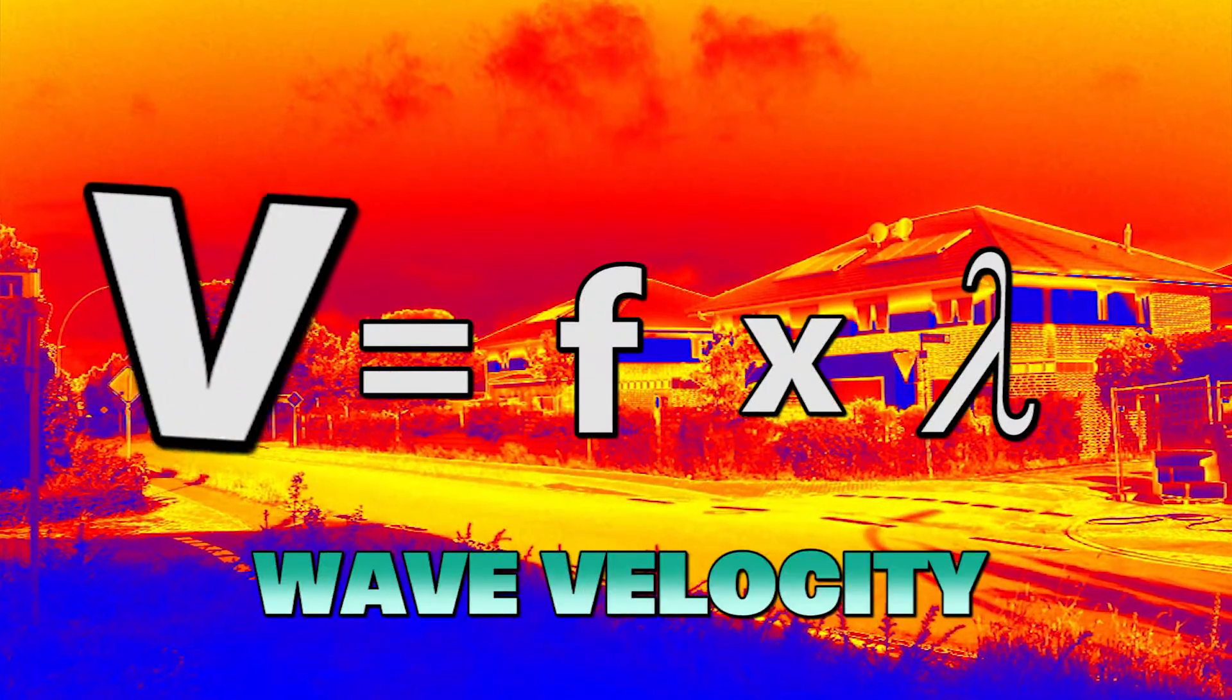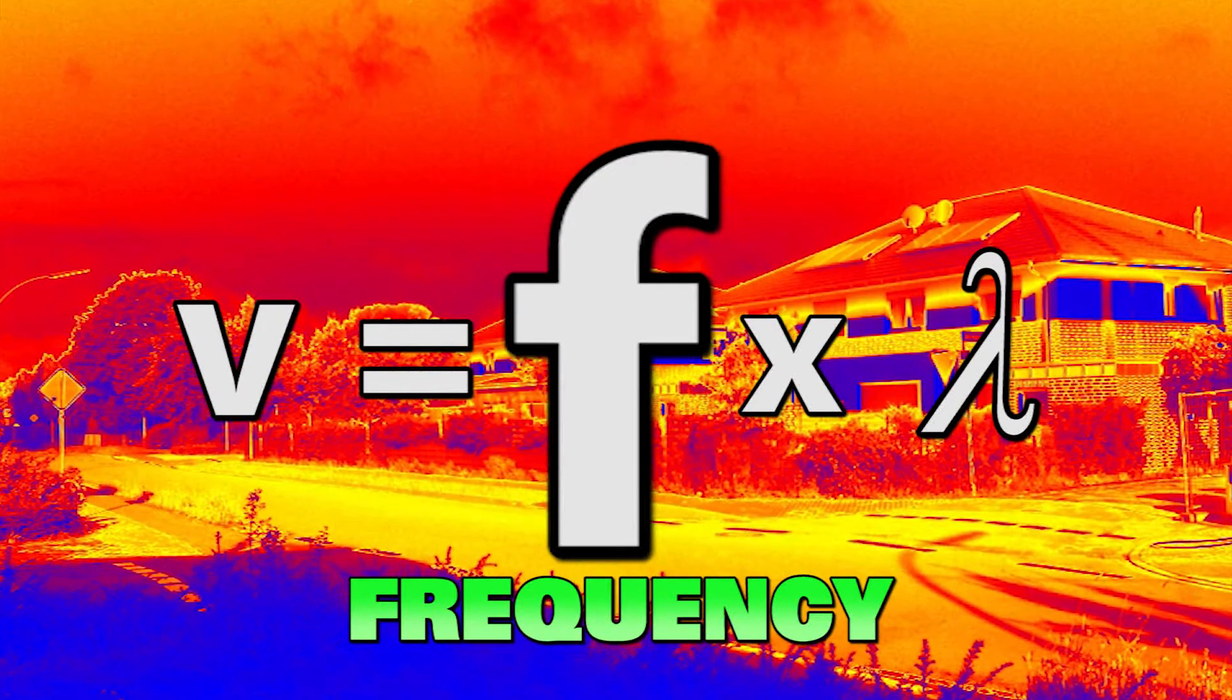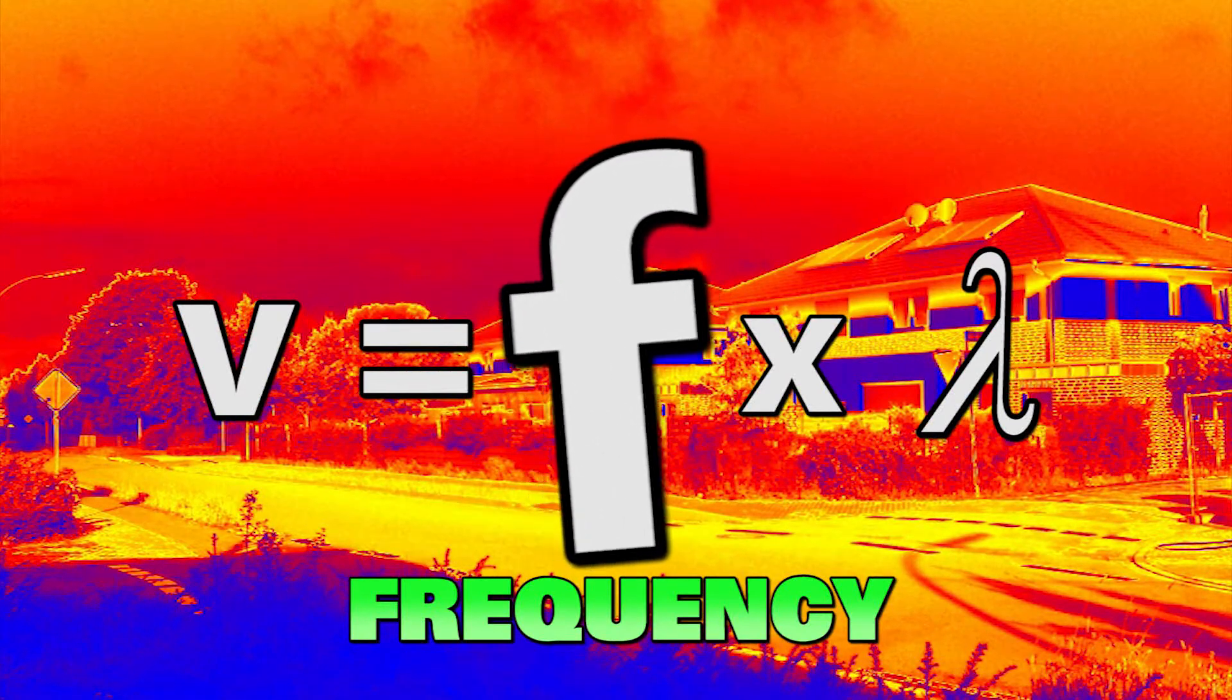V is the velocity or speed of the wave, measured in meters per second. F is the frequency, or the number of waves that pass a point in a second, measured in Hertz.